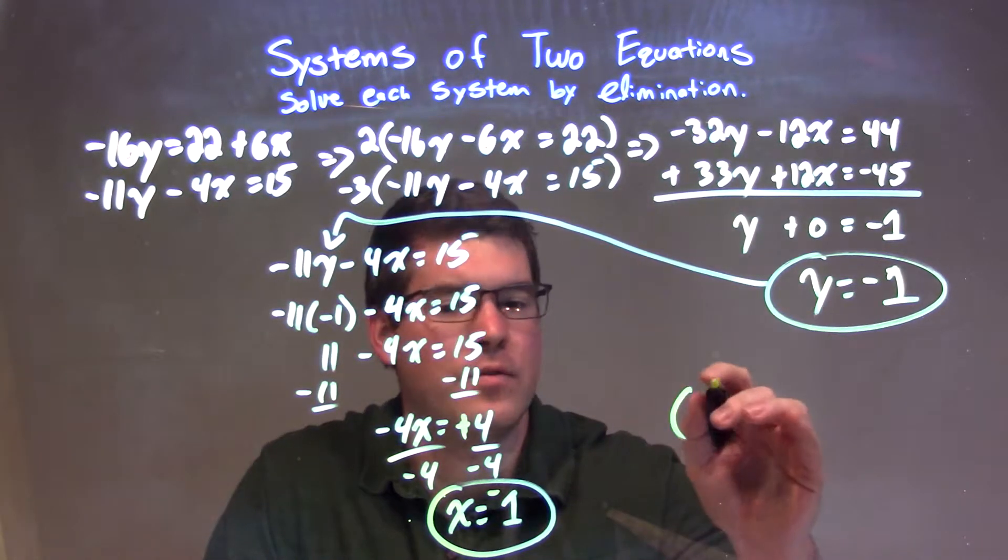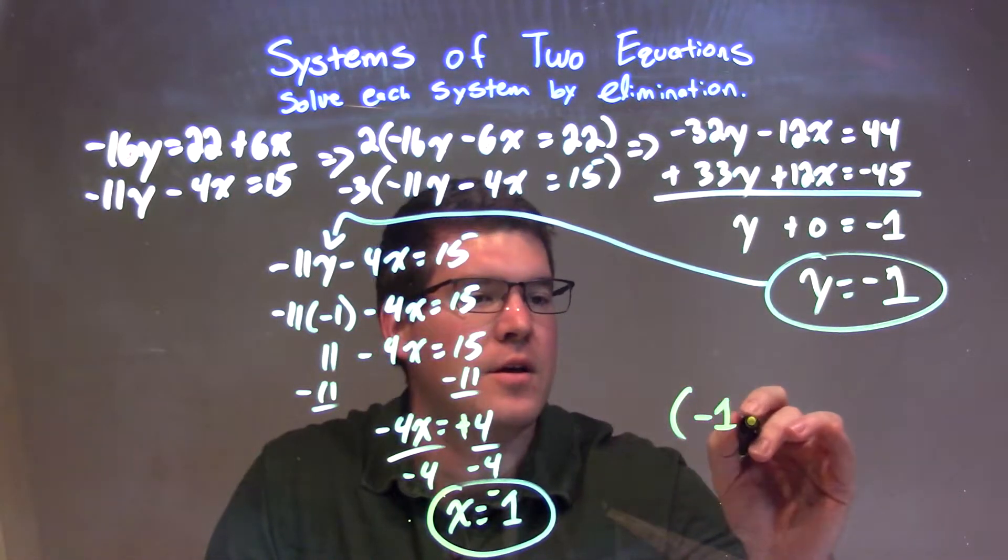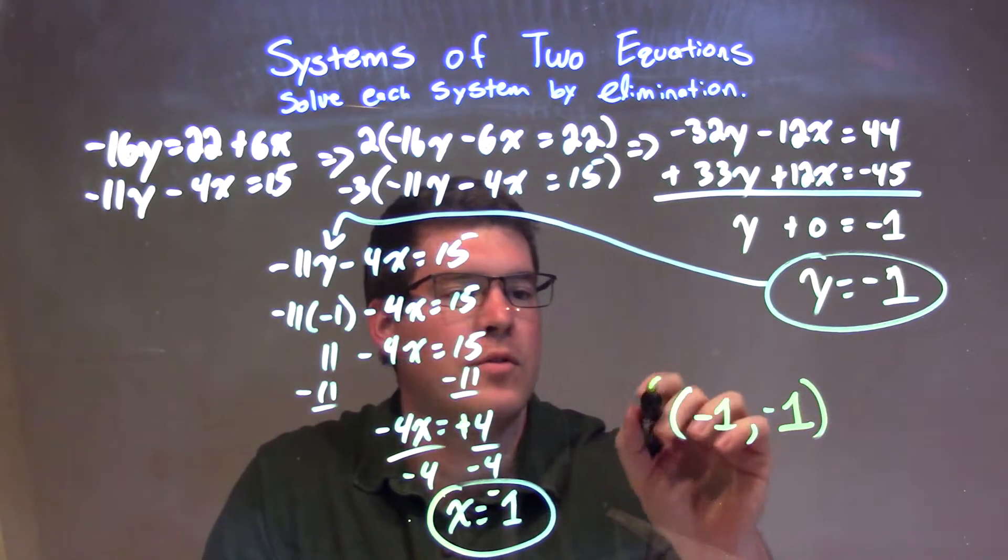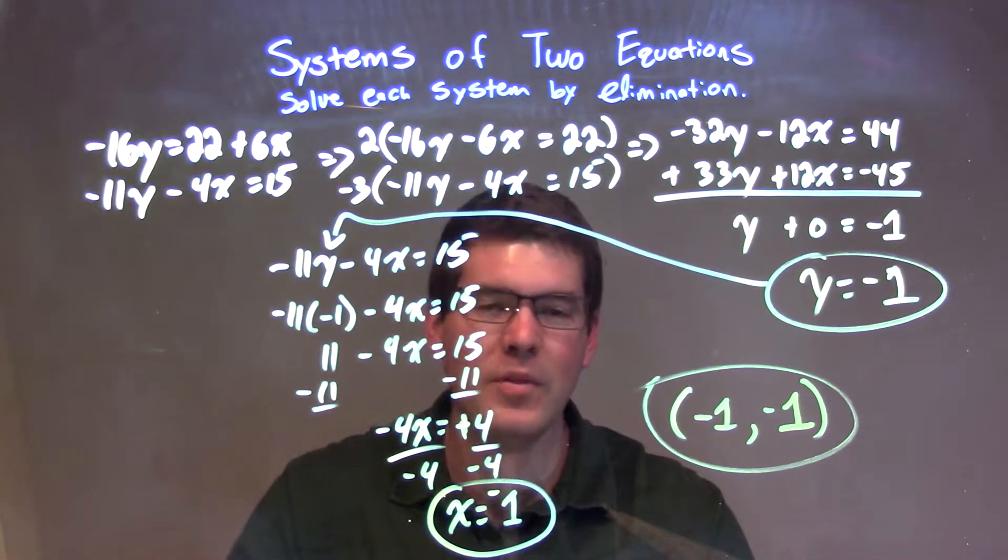And so our coordinate point final answer is negative 1 comma negative 1. All negatives are weird. Alright, but there we have it.